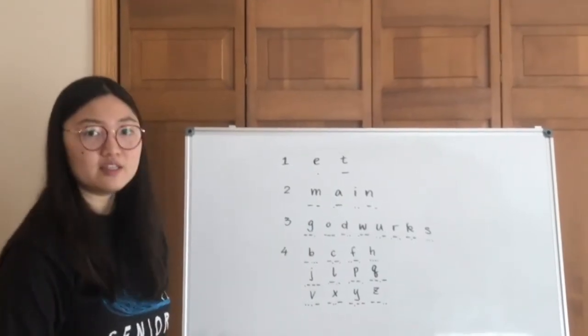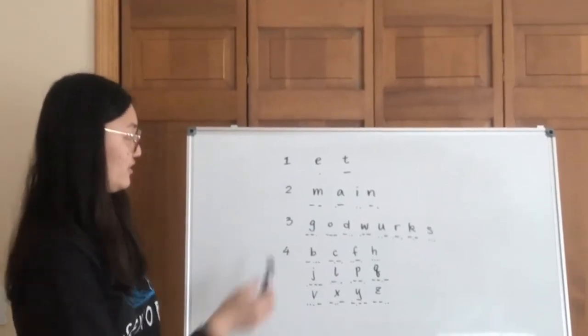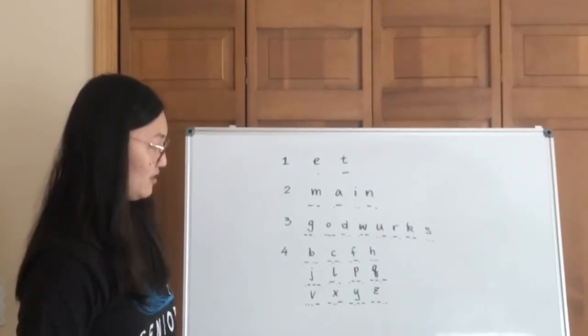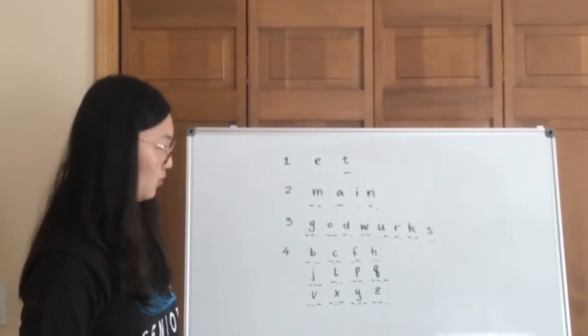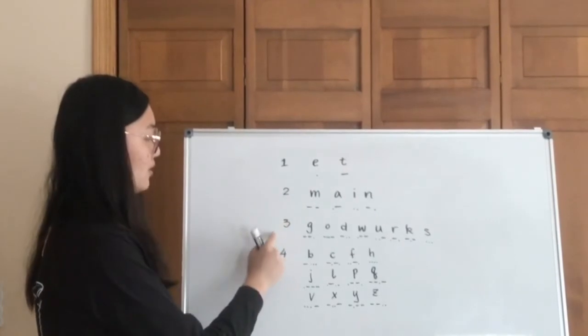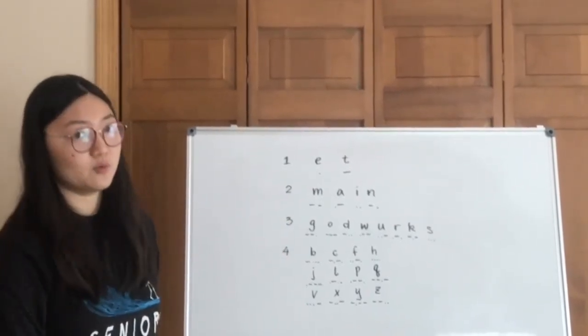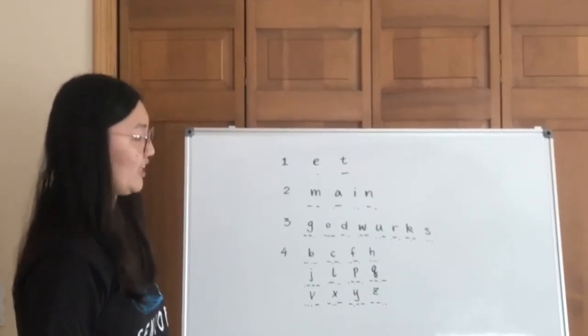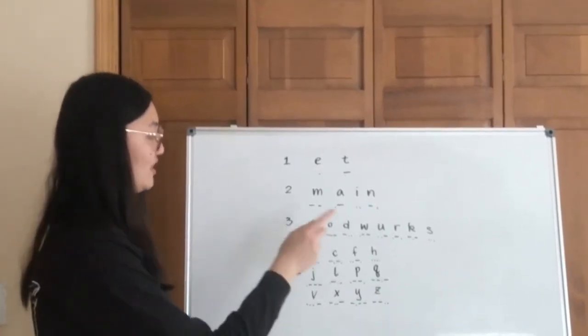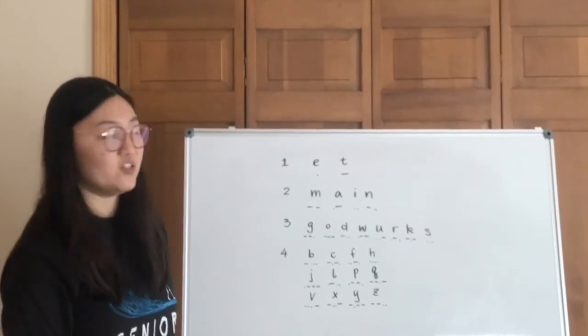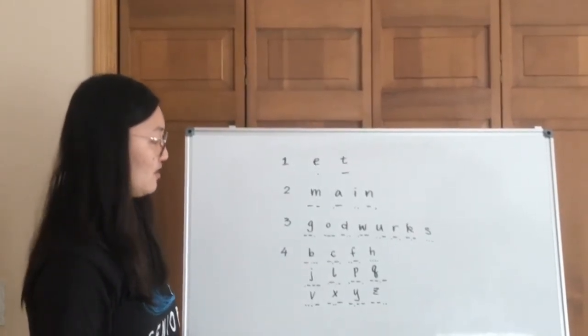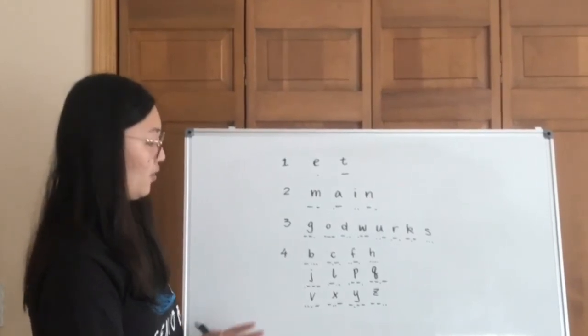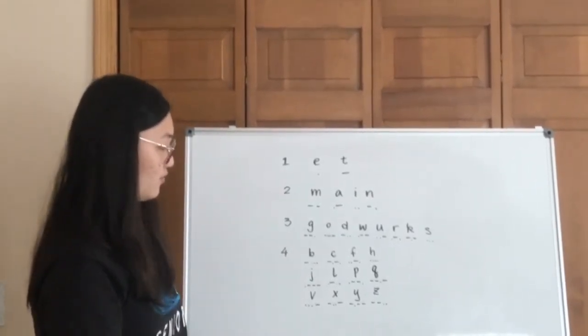And then the reason that I did this is because for the first three, I can form them into bare words, specifically for two and three. Two is 'main' and three is 'God works.' So meaning like G-O-D-W-U-R-K-S. All of these eight letters are going to be the ones holding positions of three.